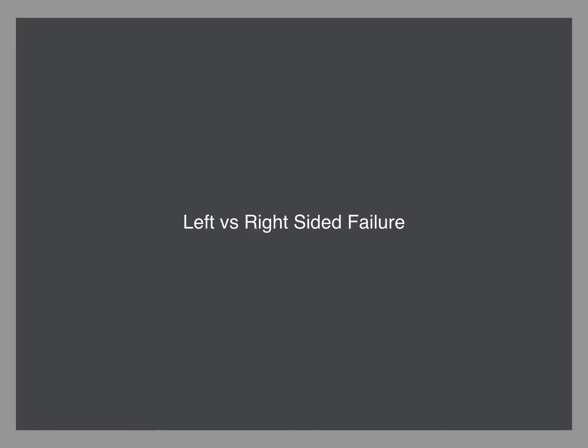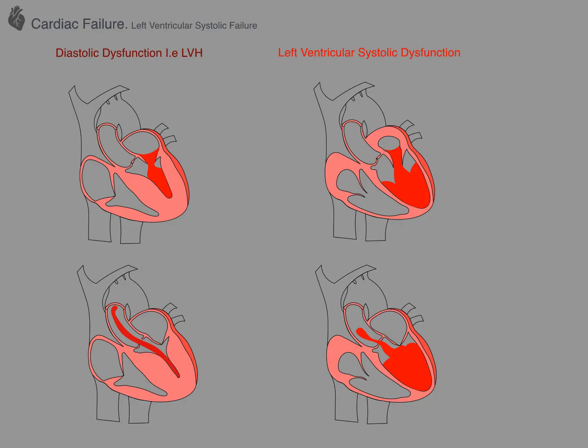Let's now move on to the differences between left and right sided failure, starting with left sided failure. This is really what we've already been talking about — you can have either diastolic dysfunction within the left ventricle or systolic failure within the left ventricle.